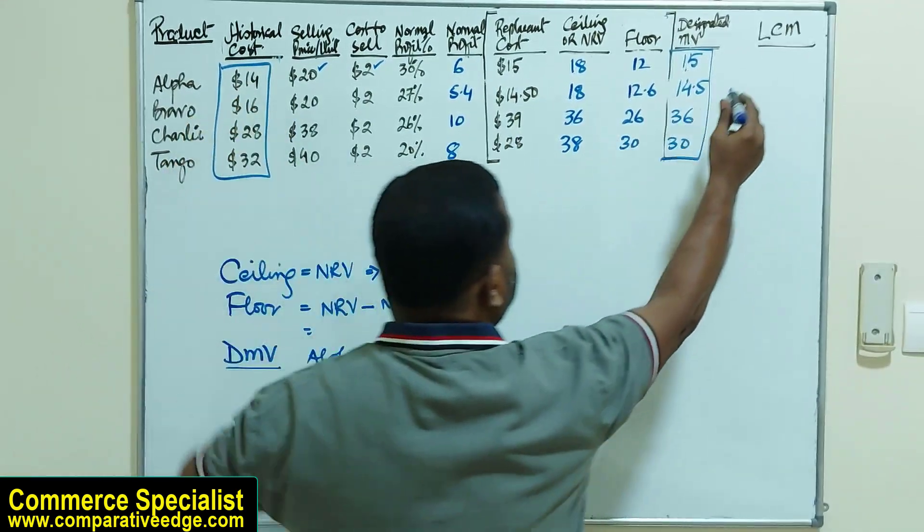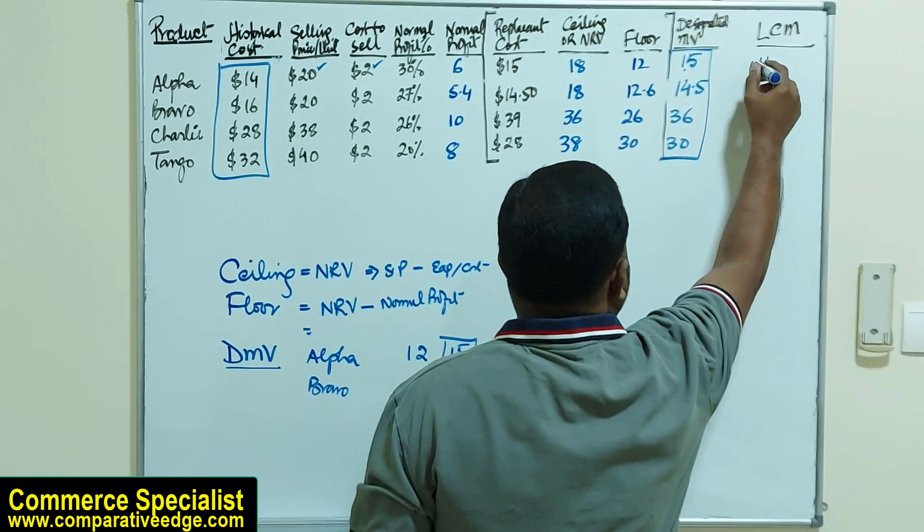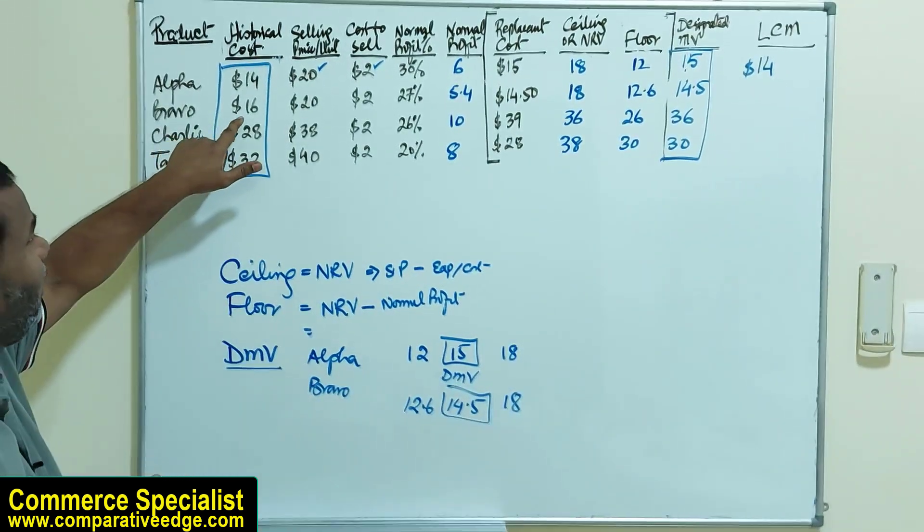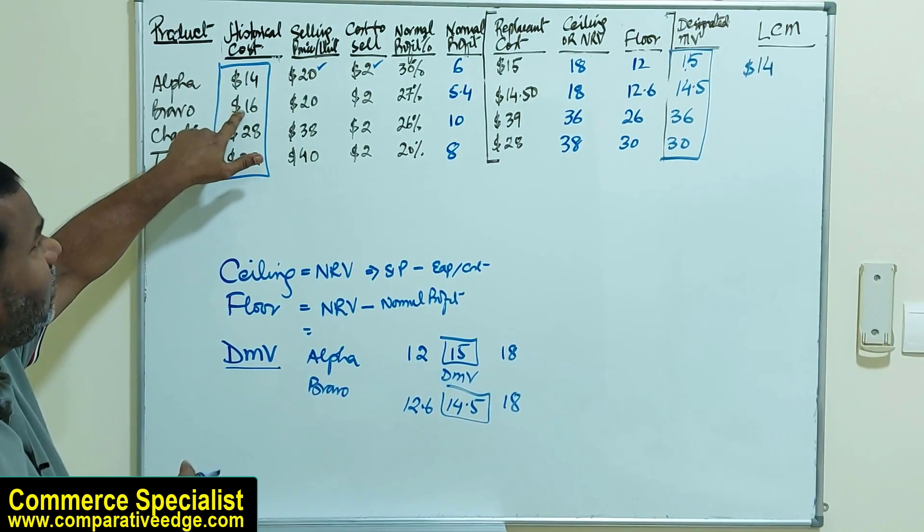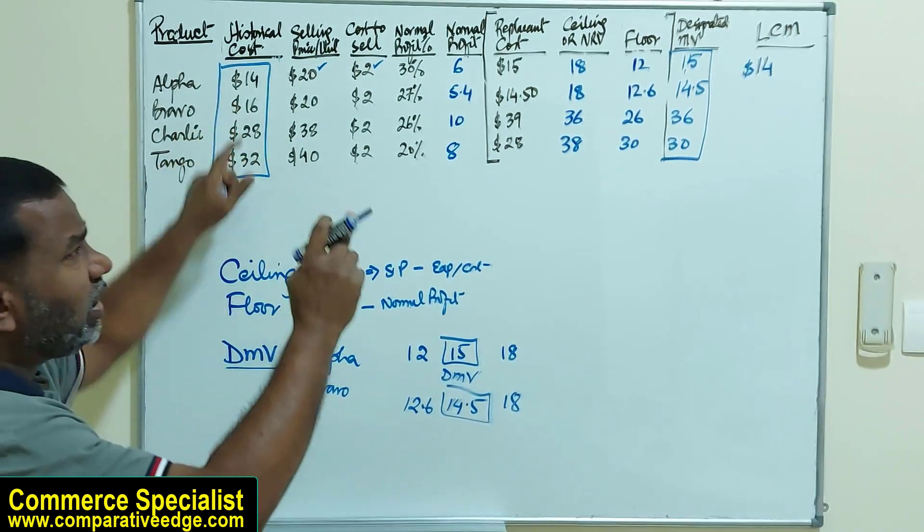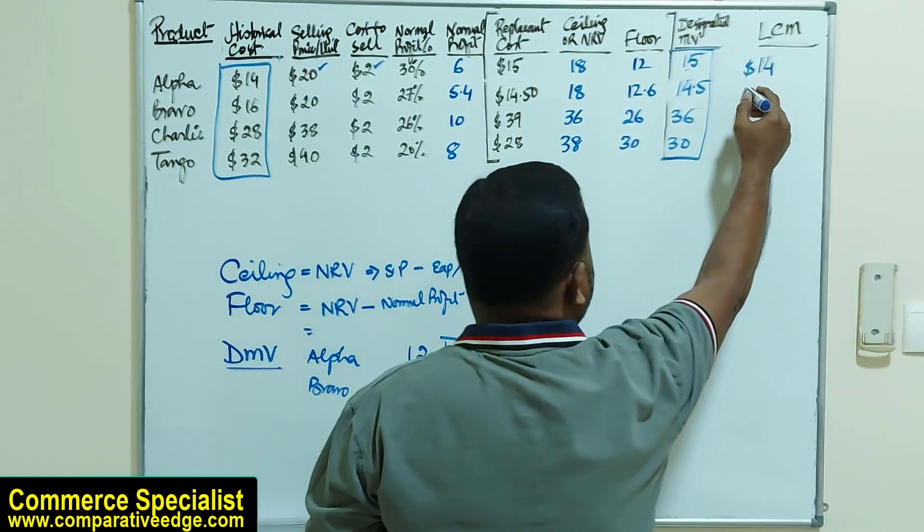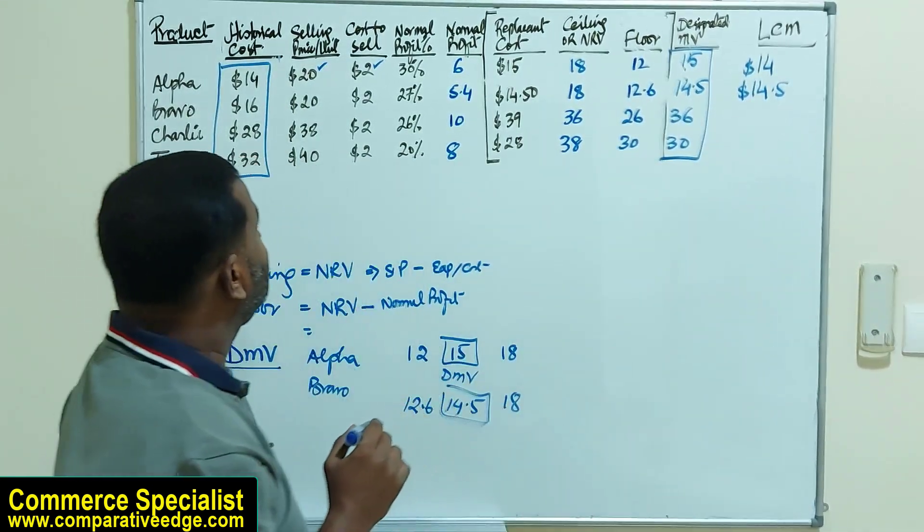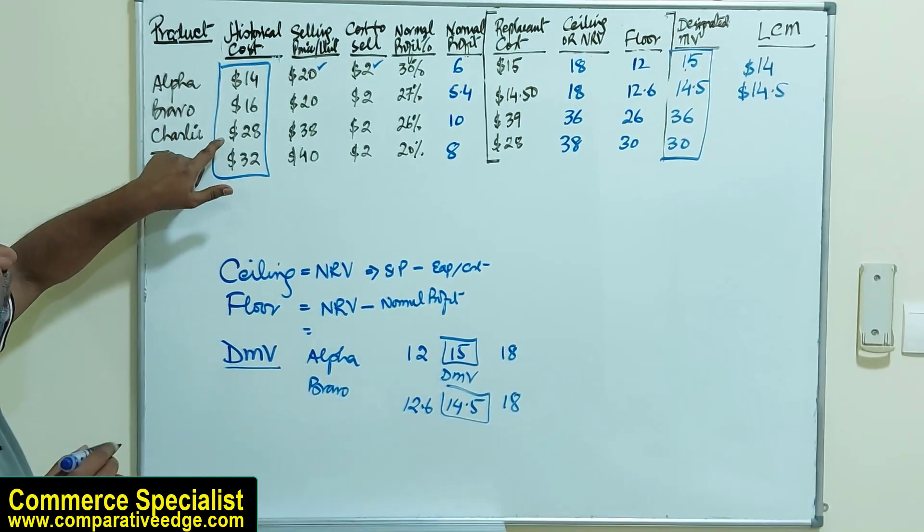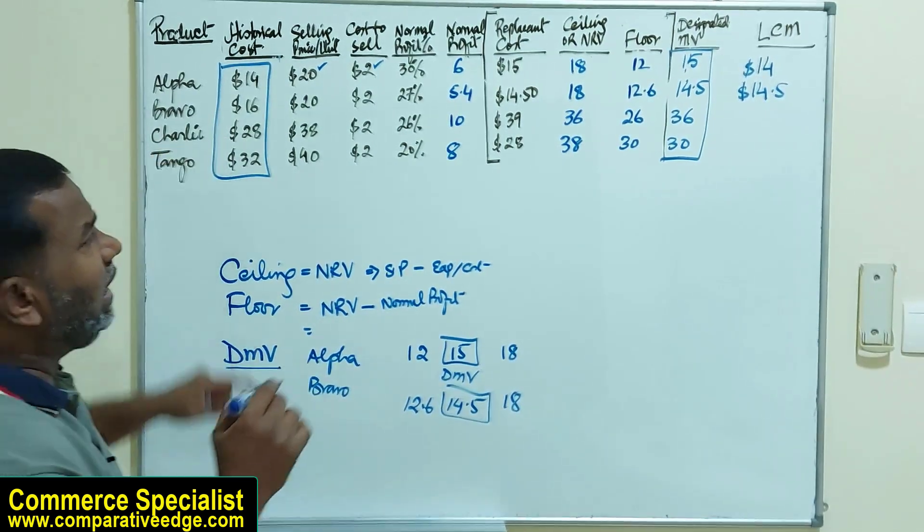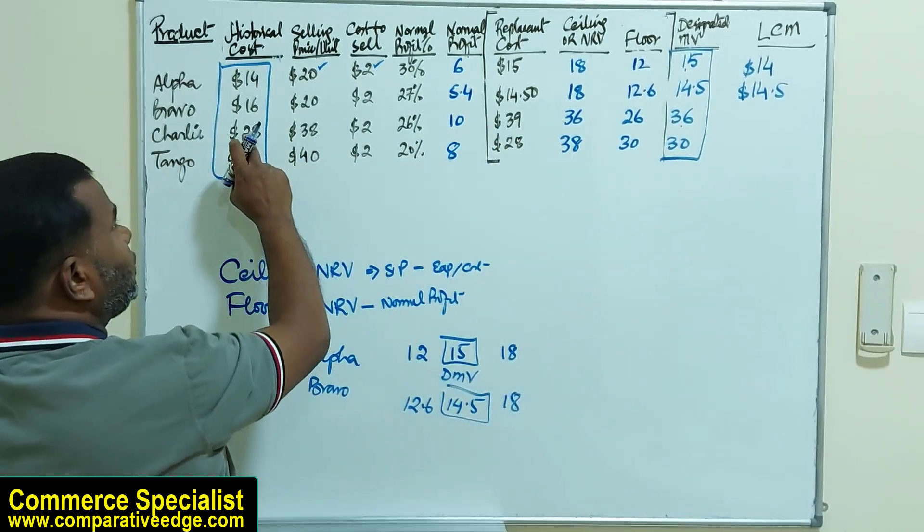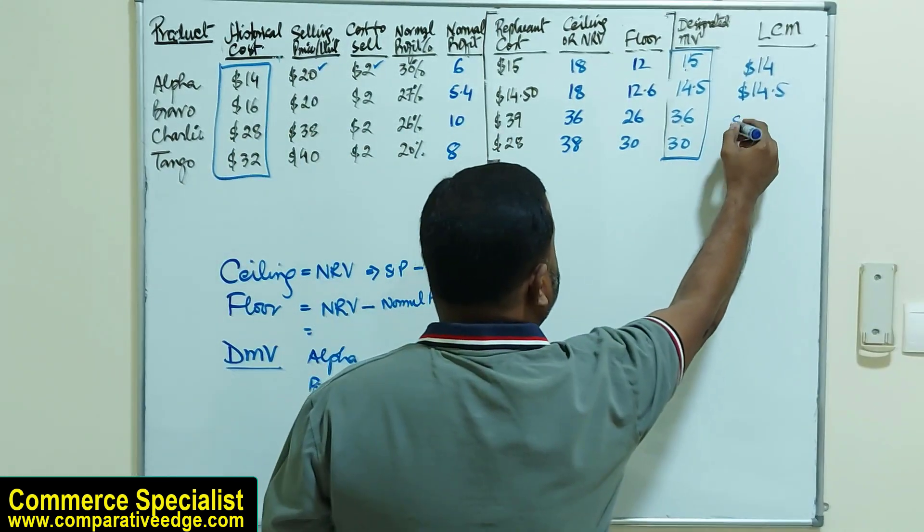So I'm going to take the lower, which is $14. Likewise, if I look at Bravo, the historical cost is $16 and designated market value is $14.50, so I will take the lower, which is $14.50. For Charlie, the historical cost is $28 and the designated market value is $36. I have to take the lower, which is $28.